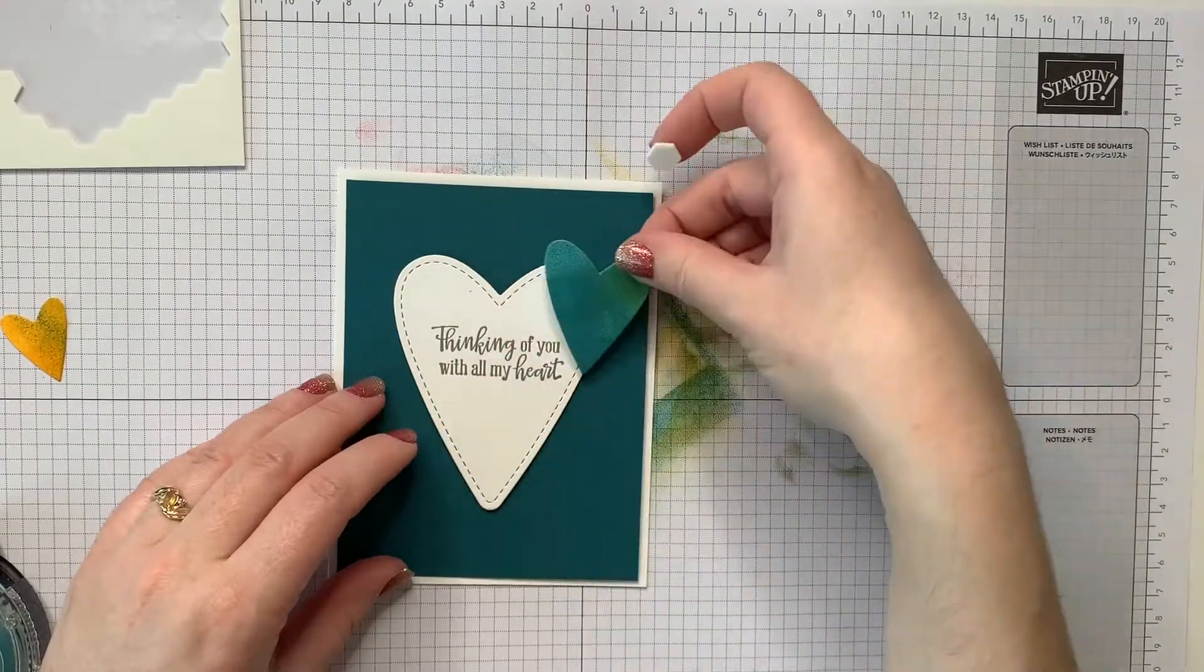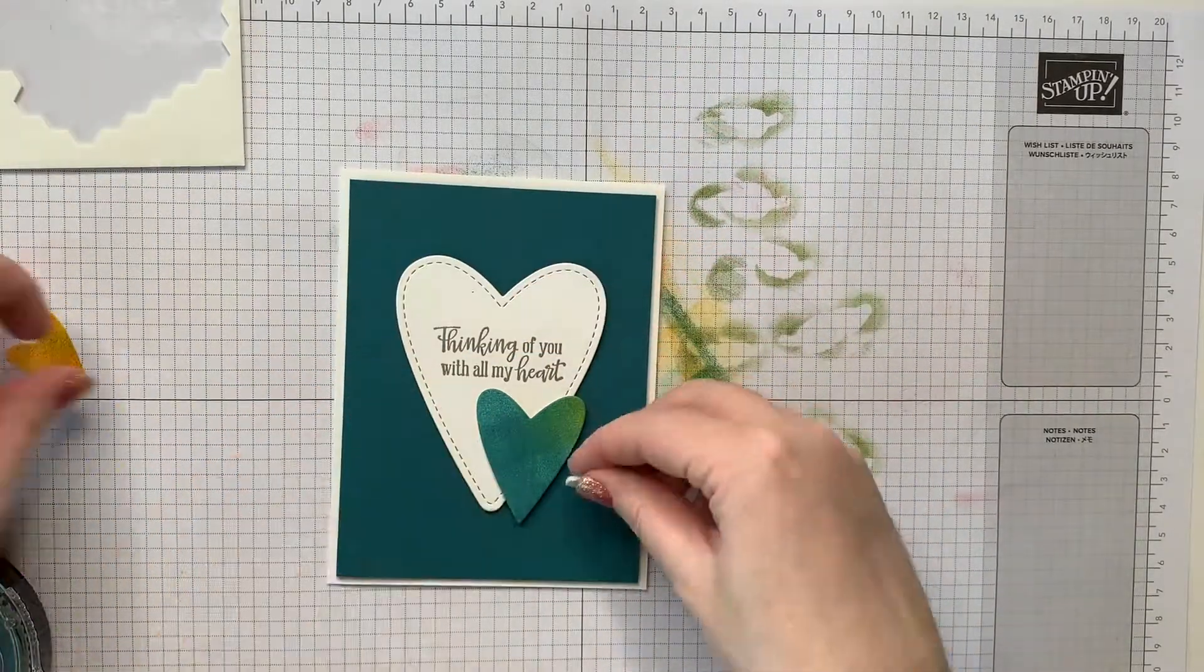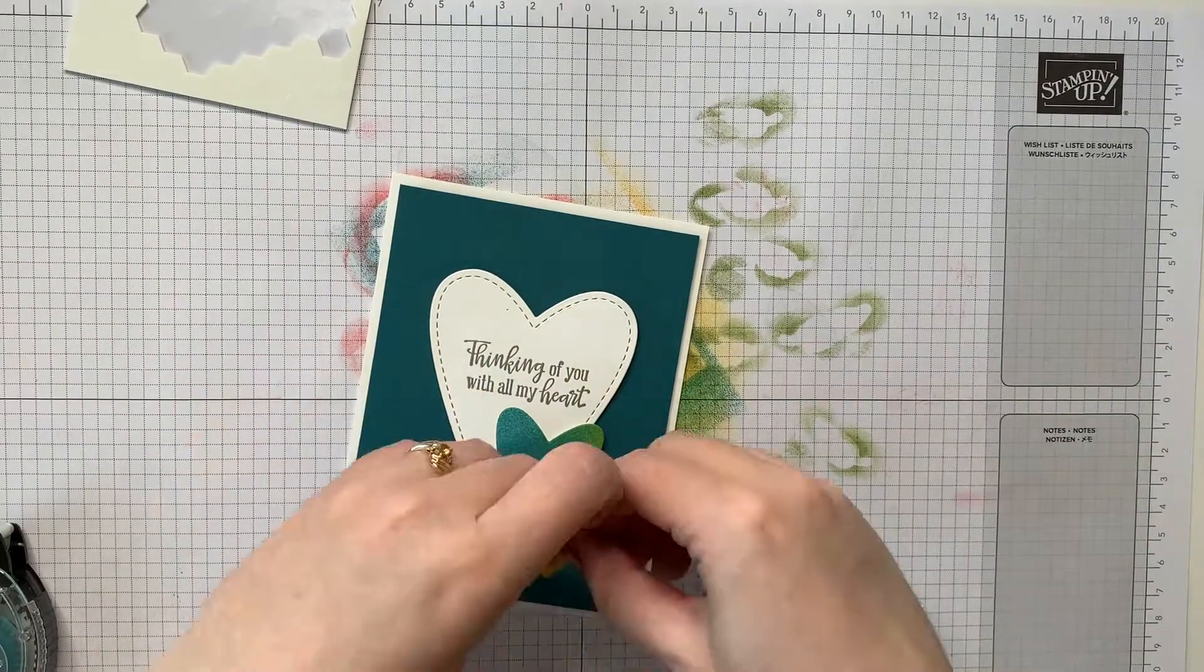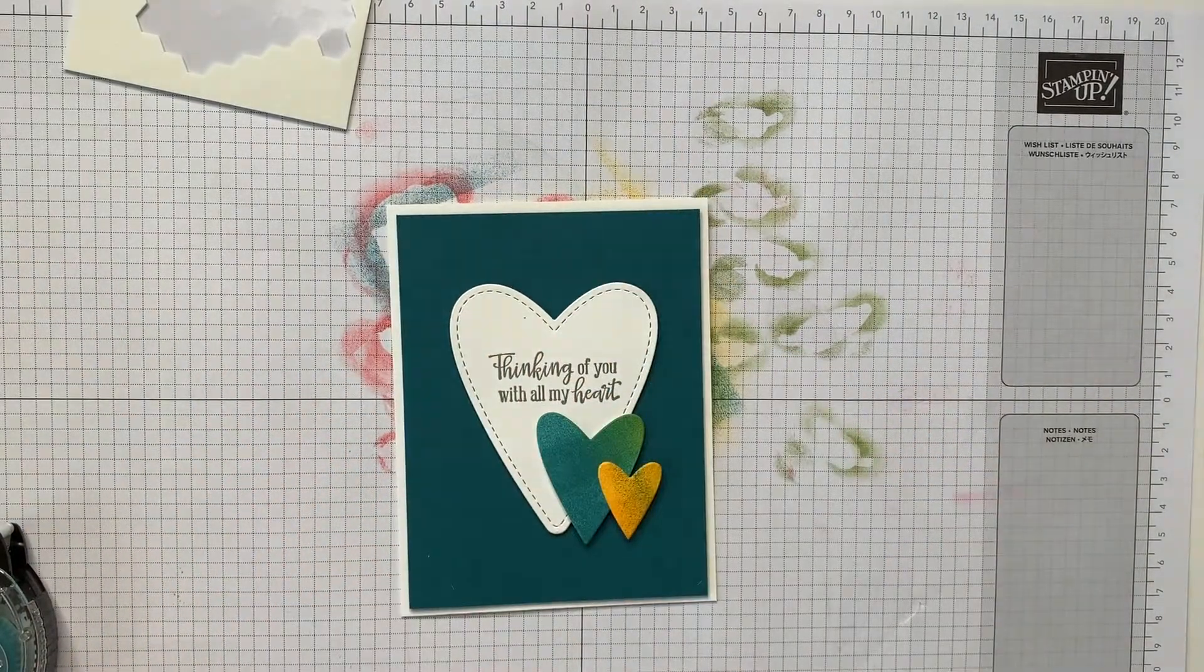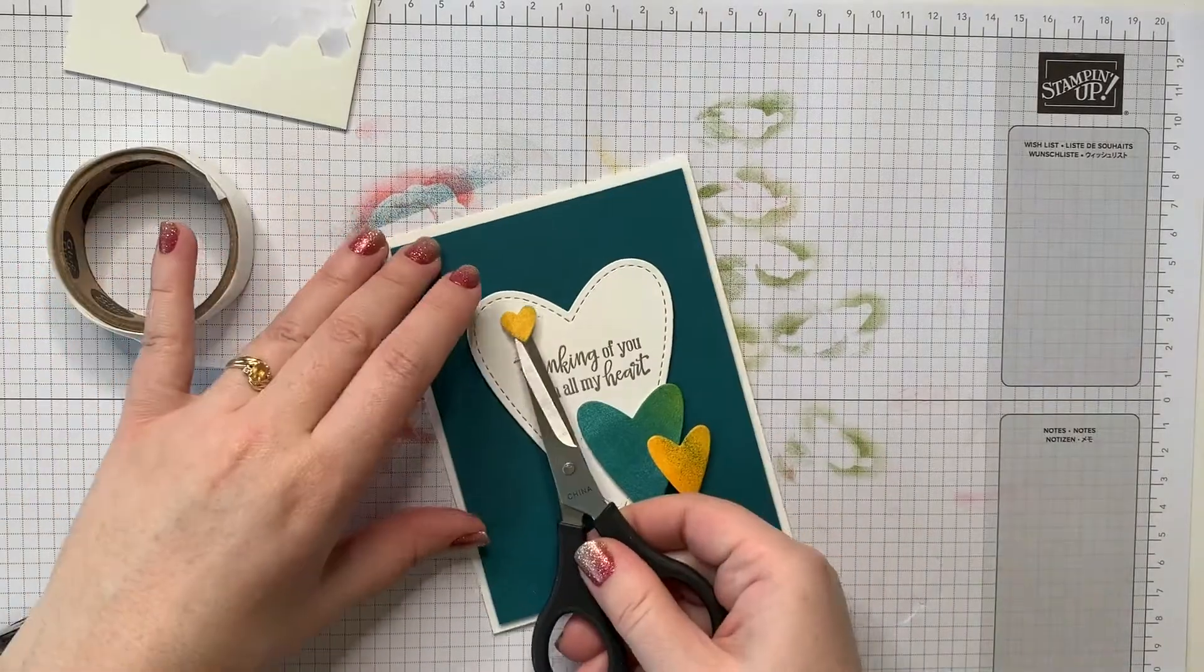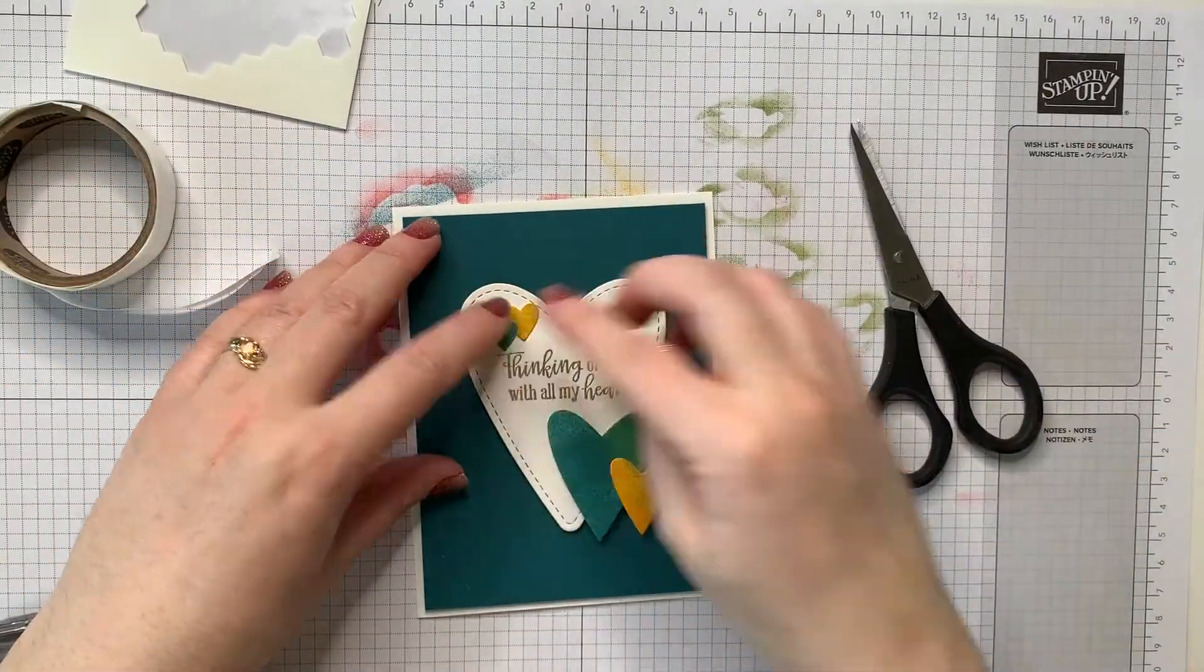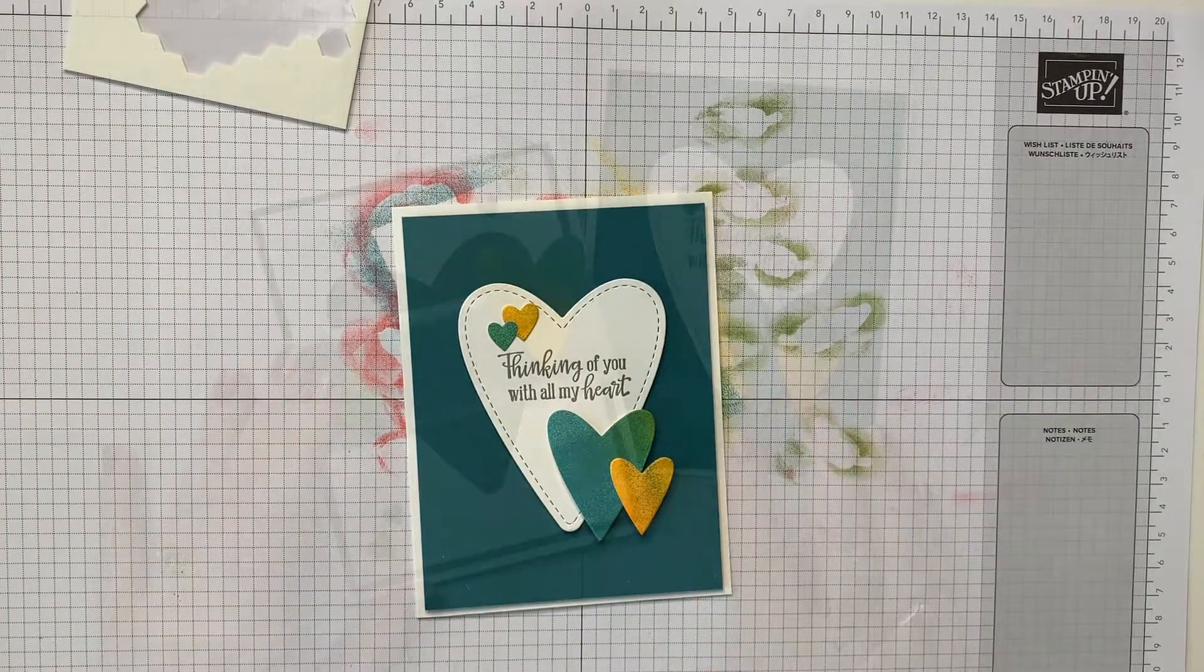And I'm using some dimensionals to pop up my brayered colored hearts and on this yellow one here I did put two dimensionals stacked behind this yellow heart so that it would really raise up and not be lopsided on top of the teal colored heart.